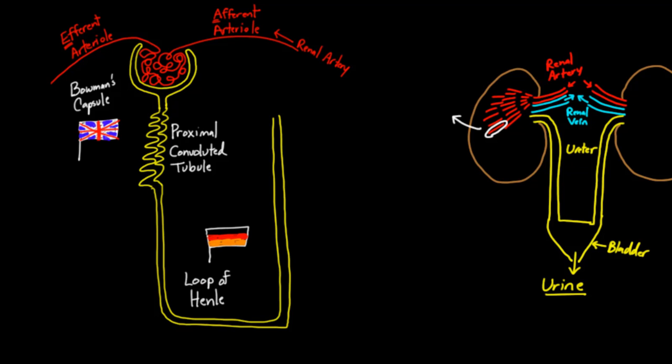And after the loop of Henle, we have another area that's very convoluted. Very convoluted. And so you can guess what we call this, because we're going to probably try to stay consistent.